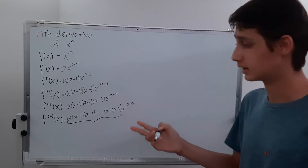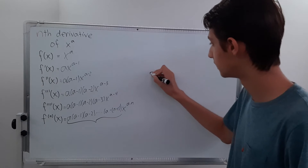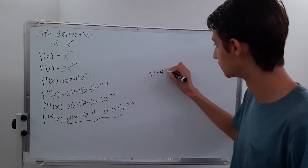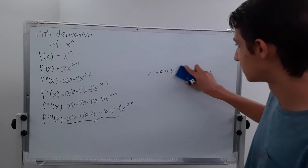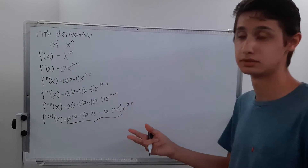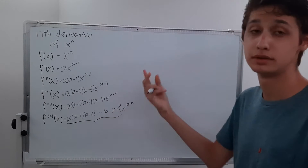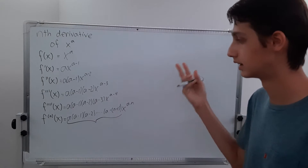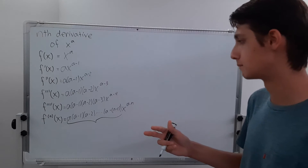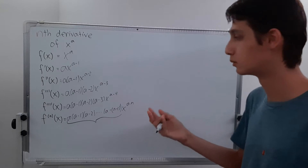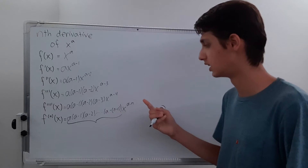Now we need to find a compact expression for that coefficient product. It kind of looks like a factorial — for example, 5 factorial equals 5 times 4 times 3 times 2 times 1. It doesn't look exactly like a factorial because we have letters rather than fixed numbers, and a could be anything, so it's not strictly a factorial, but it looks like one. We'll be able to represent it that way later.